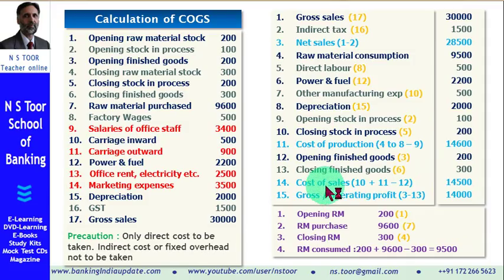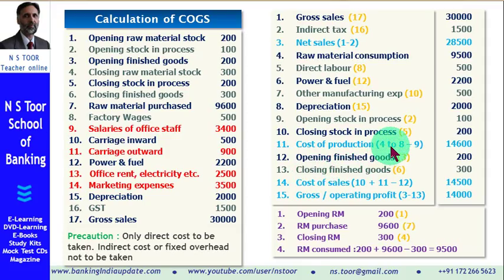The cost of sales concept explains how much cost we have to incur on those goods which we have sold. Goods that are produced but not sold are not taken into consideration — as we can see, closing finished goods (item 13) is deducted out of cost of production. I hope the contents of this video will benefit you. Thank you for watching.